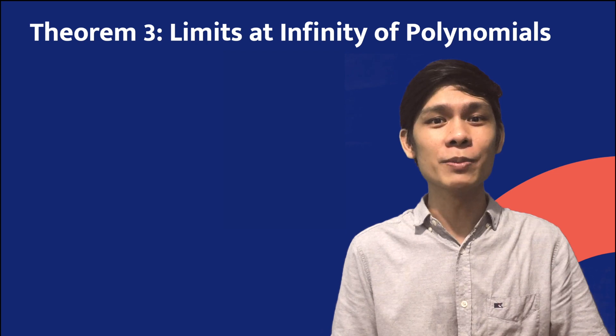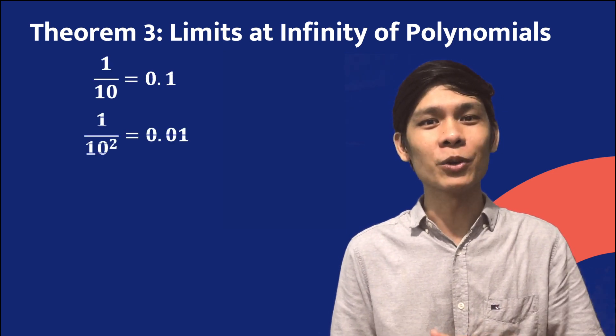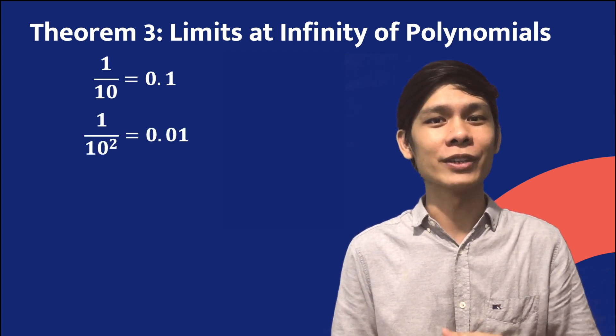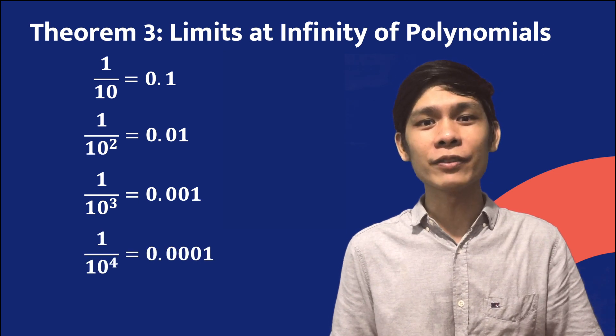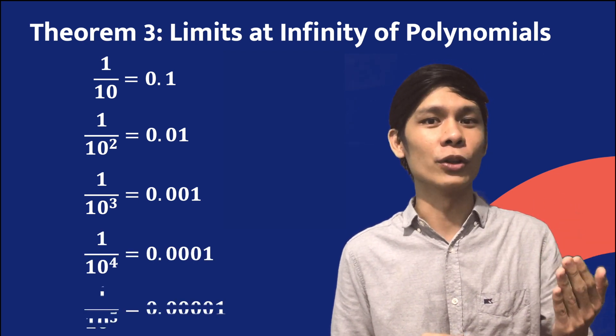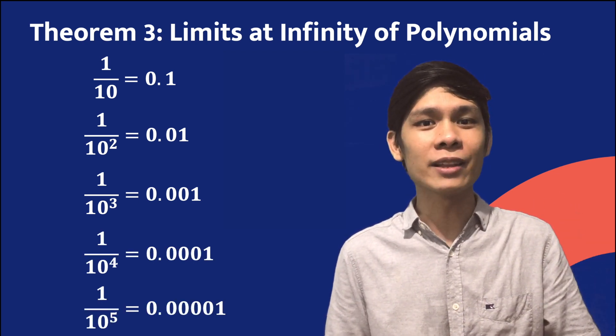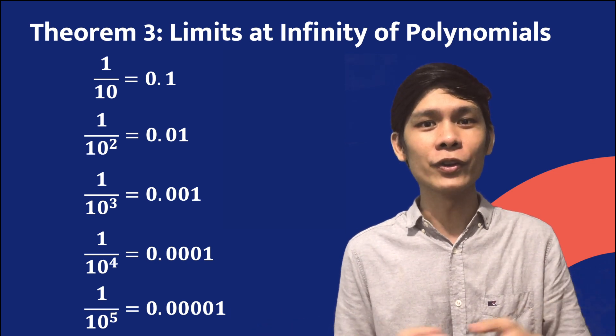To prove this, let us have a fraction with a numerator fixed at 1 and multiples of 10 for the denominator. As you can see, the value of the fraction gets smaller and smaller, infinitely small, and it approaches zero. To further explain this theorem, let us find the limit of some rational functions.